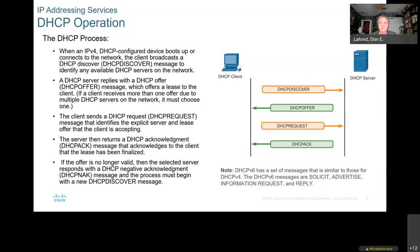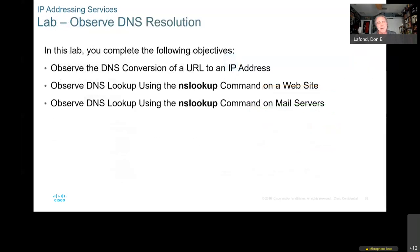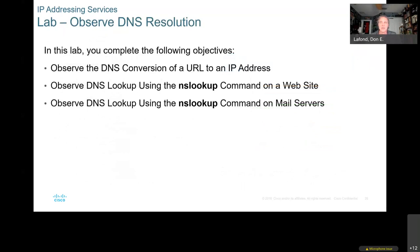DHCPv6 has a set of messages similar to DHCPv4, including router solicitation, router advertisement, information requests, and replies. You're going to do a lab on observing DNS resolution using the nslookup command.